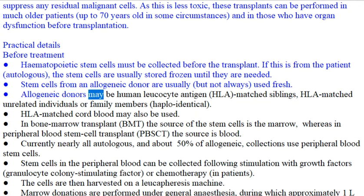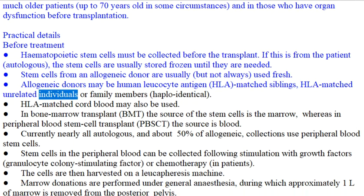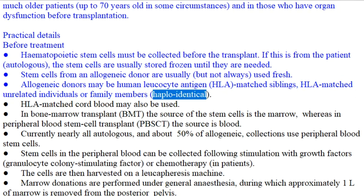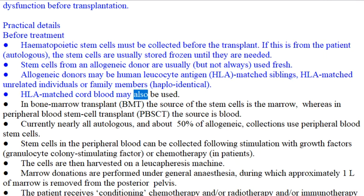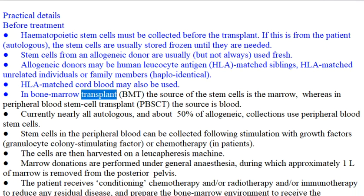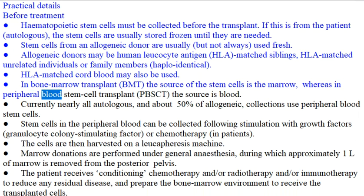Allogeneic donors may be human leukocyte antigen (HLA) matched siblings, HLA-matched unrelated individuals, or family members (haploidentical). HLA-matched cord blood may also be used. In bone marrow transplant (BMT), the source of the stem cells is the marrow, whereas in peripheral blood stem cell transplant (PBSCT), the source is blood.